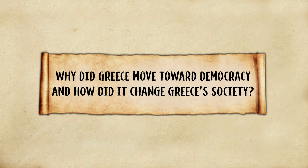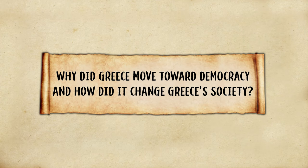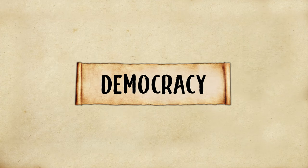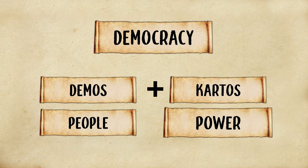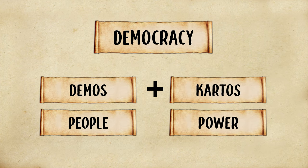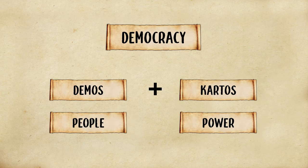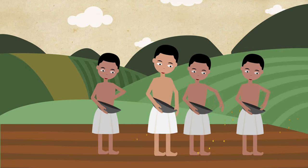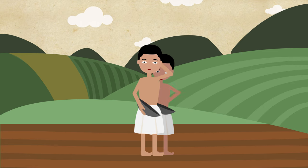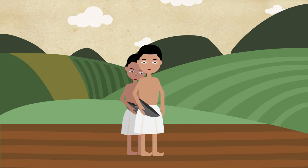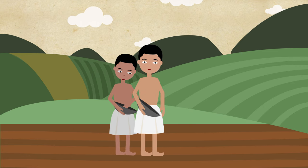Why did Greece move toward democracy and how did it change Greece's society? The word democracy comes from two Greek words: demos, meaning people, and kratos, meaning power — so democracy means power of the people. Greek farmers grew upset when war slaves were brought back to Greece to perform labor jobs, making it difficult for farmers to earn a living.